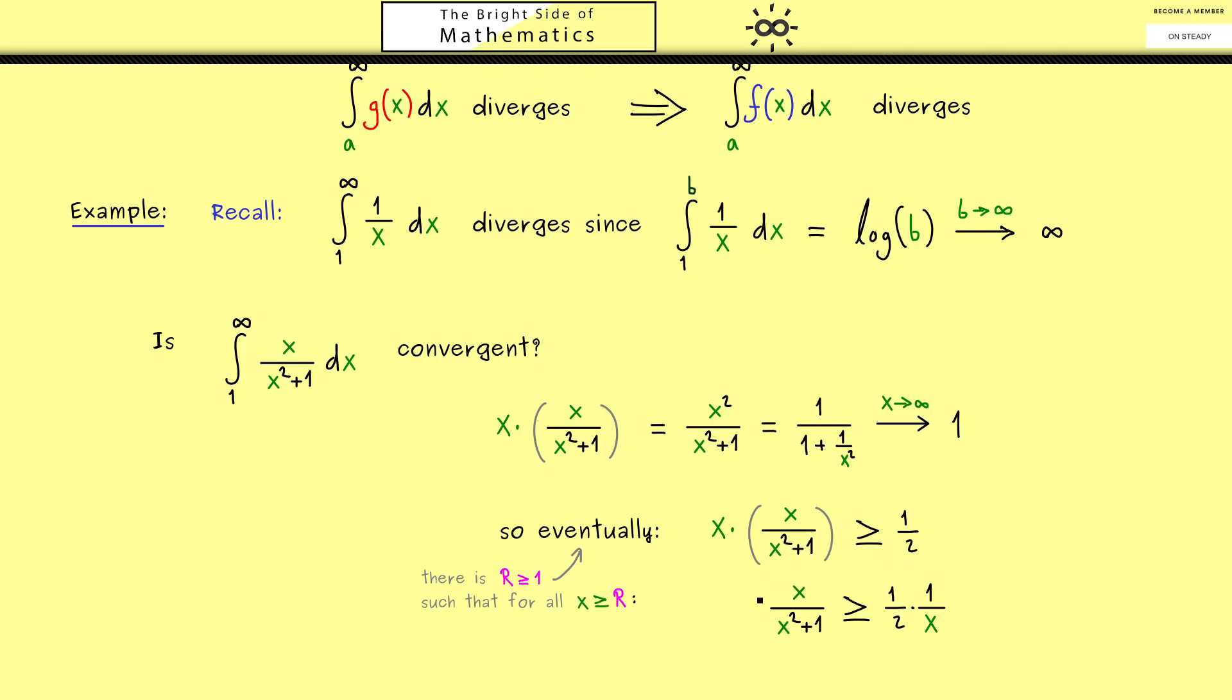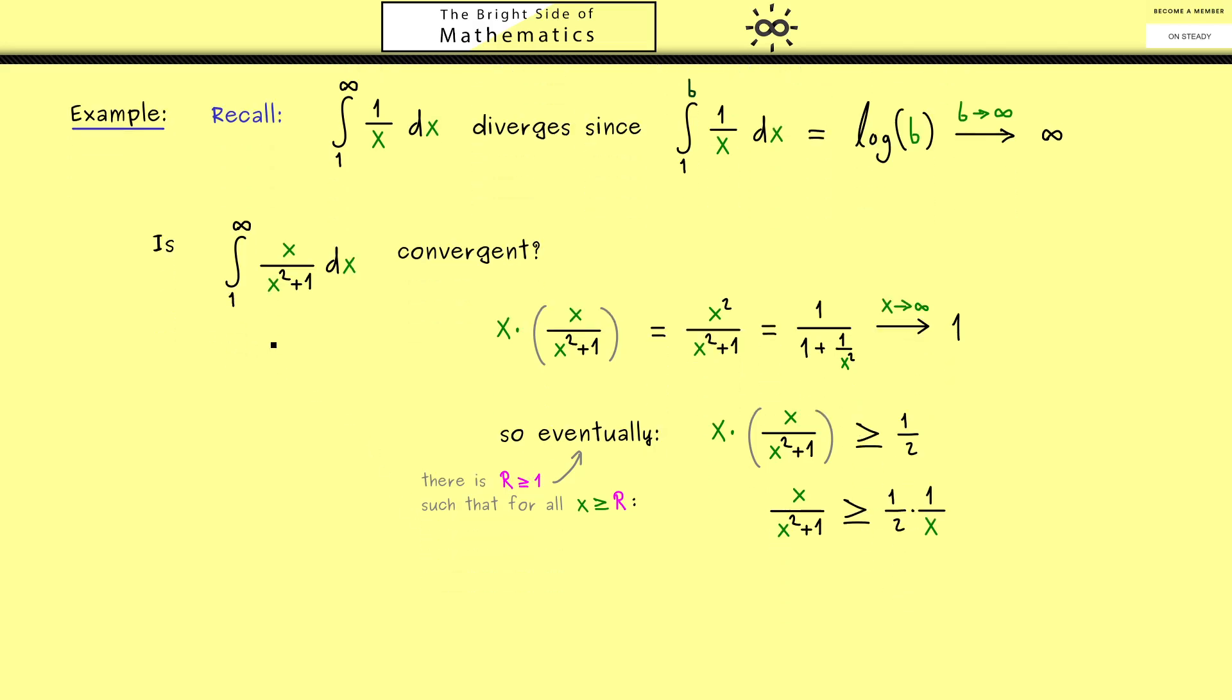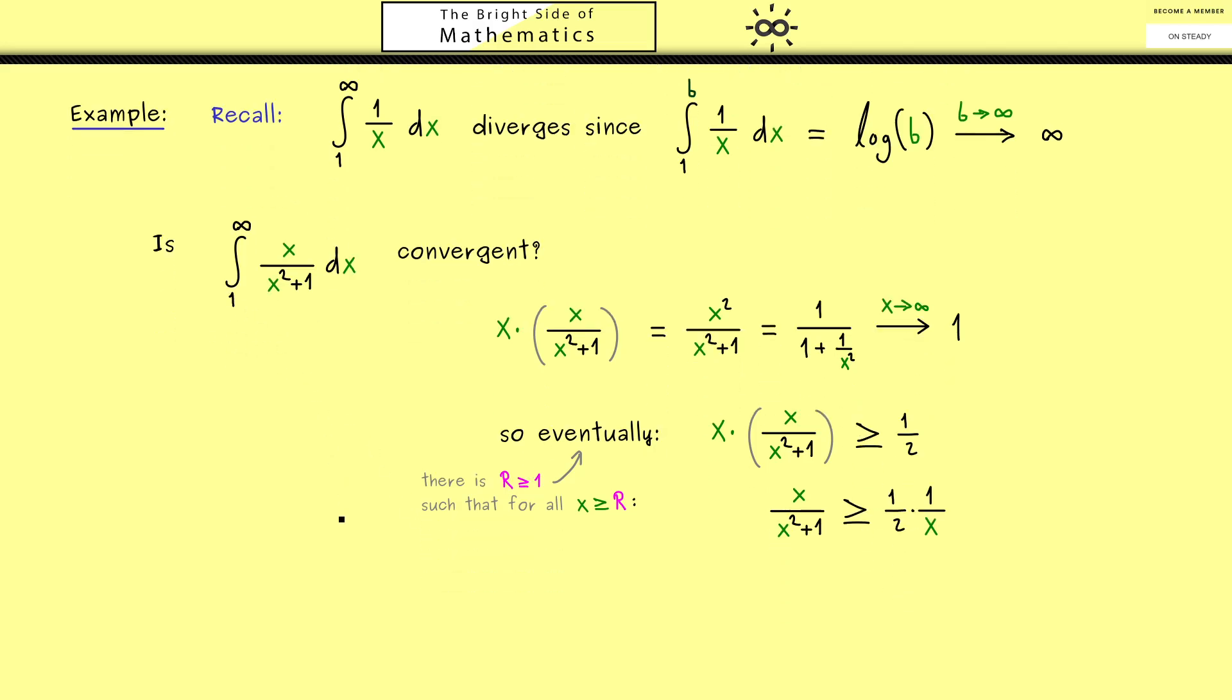In other words we can apply the theorem from above where the upper limit here is capital R. So writing this down we see this integral starting with R is divergent. And there you see applying the minorant theorem is not hard at all when you can produce such an inequality here. Therefore the only question that remains now is do we also have divergence when we put in 1 as the lower limit here.